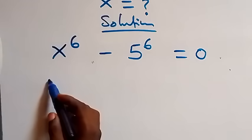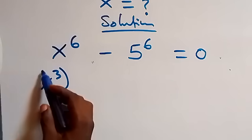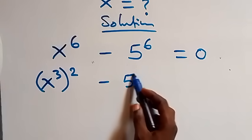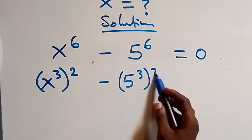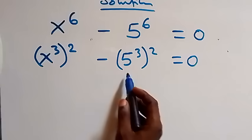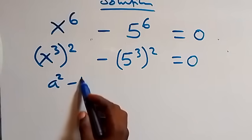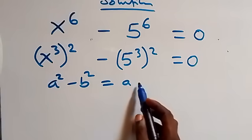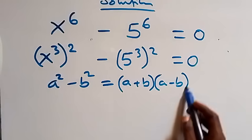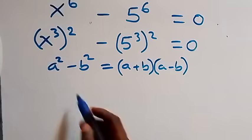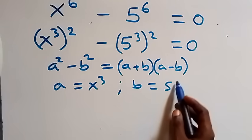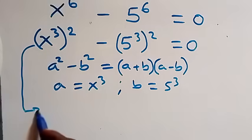We can write this as x raised to power 3, raised to power 2, minus 5 raised to power 3, raised to power 2, equals 0. Following the difference of two squares — when we have a squared minus b squared, this is the same as (a + b)(a - b) — here a stands as x raised to power 3 and b stands as 5 raised to power 3.